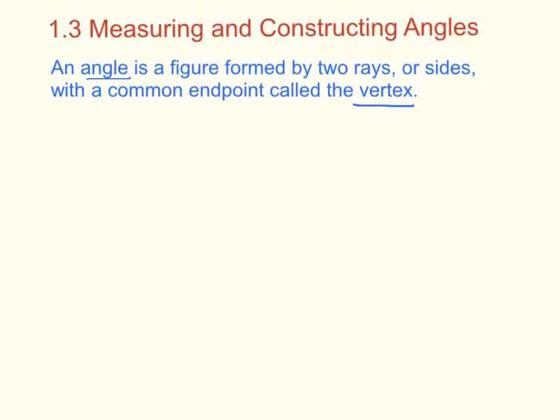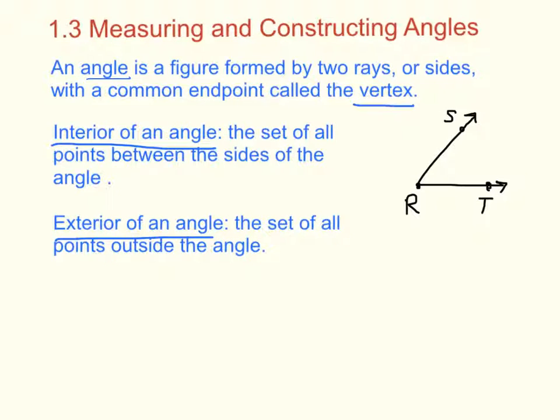We're going to start off with two vocab words. An angle is a figure formed by two rays, or sides, with a common endpoint called the vertex. So the vertex is that common endpoint where the two rays come together. So let's draw an angle here. There's one ray. There's another ray. We're going to call this endpoint R. That's called the vertex. I'm going to put two other points on the ray, and let's call them S and T.